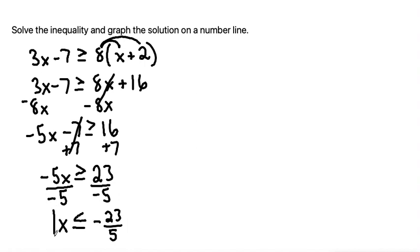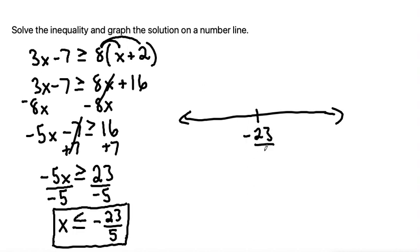The second part of the question asks us to graph the solution on a number line. So let me draw a little number line. We can mark our number wherever we want. The idea is that smaller numbers are towards the left, like going towards negative infinity. Larger numbers are towards the right, towards positive infinity.